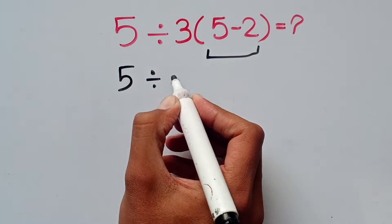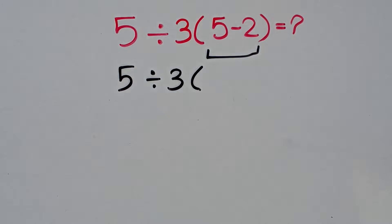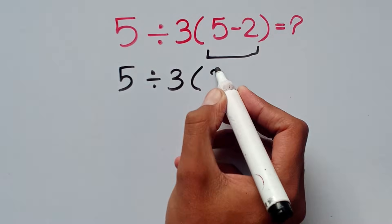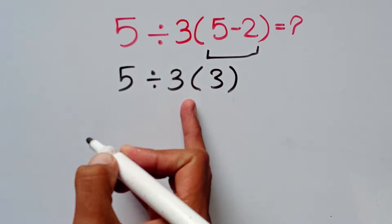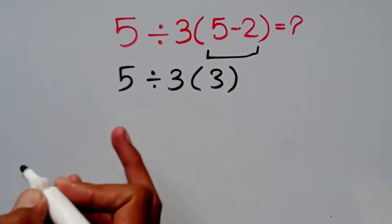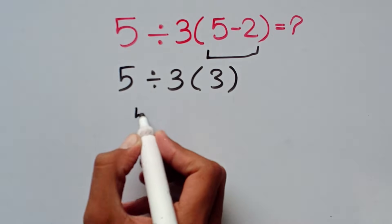So I can rewrite: 5 divided by 3, open parentheses, 5 minus 2 equals 3. Now here, multiplication and division have equal priority, so first we can solve this division.